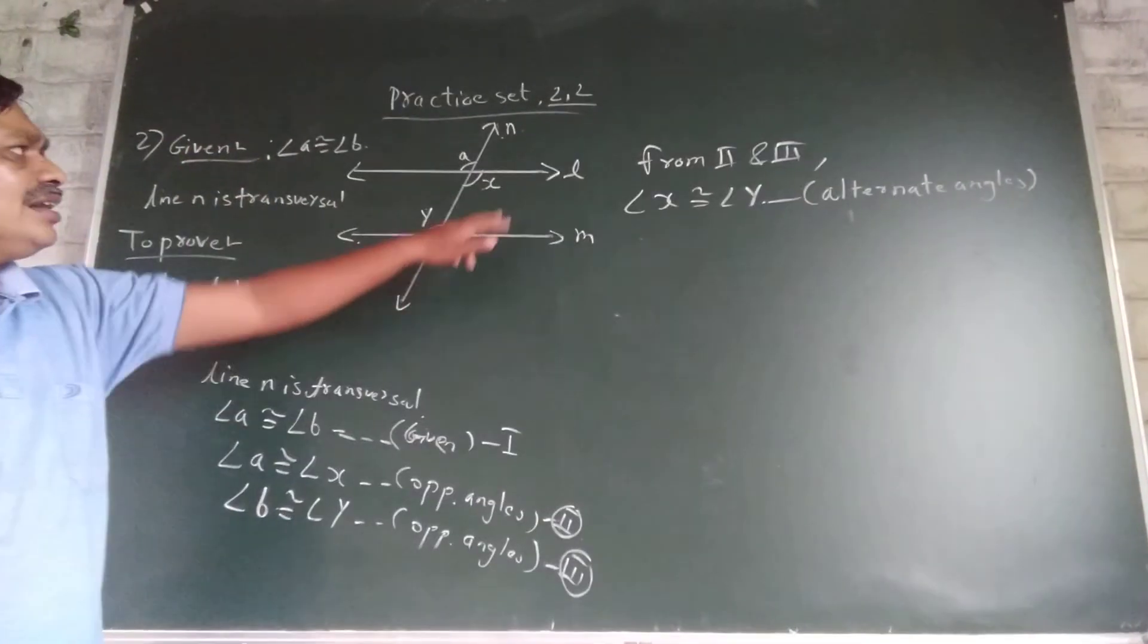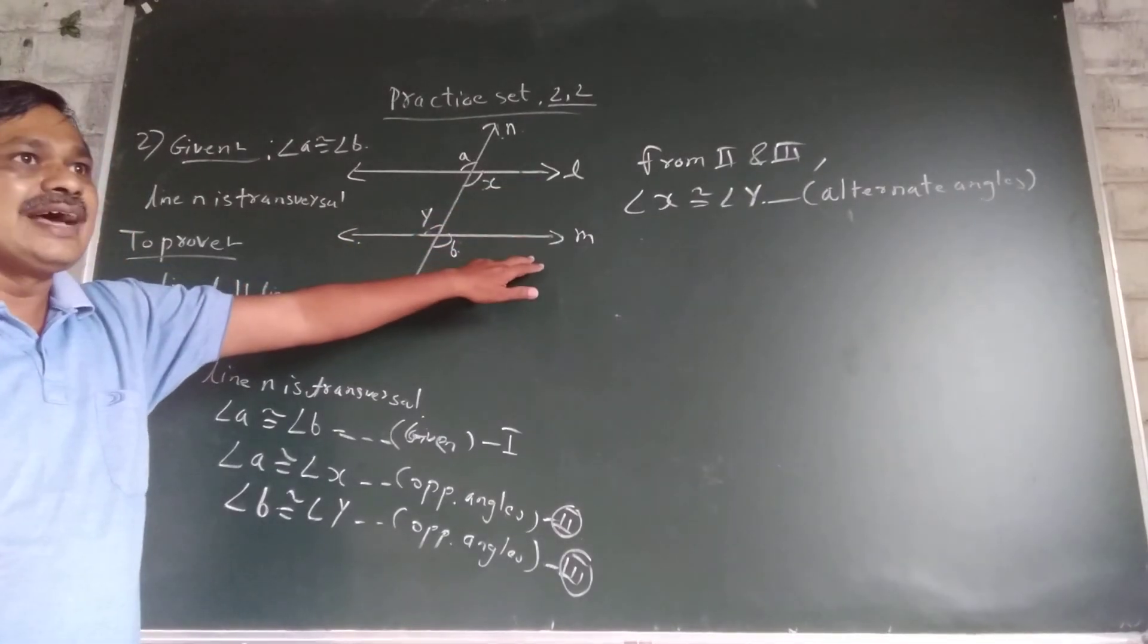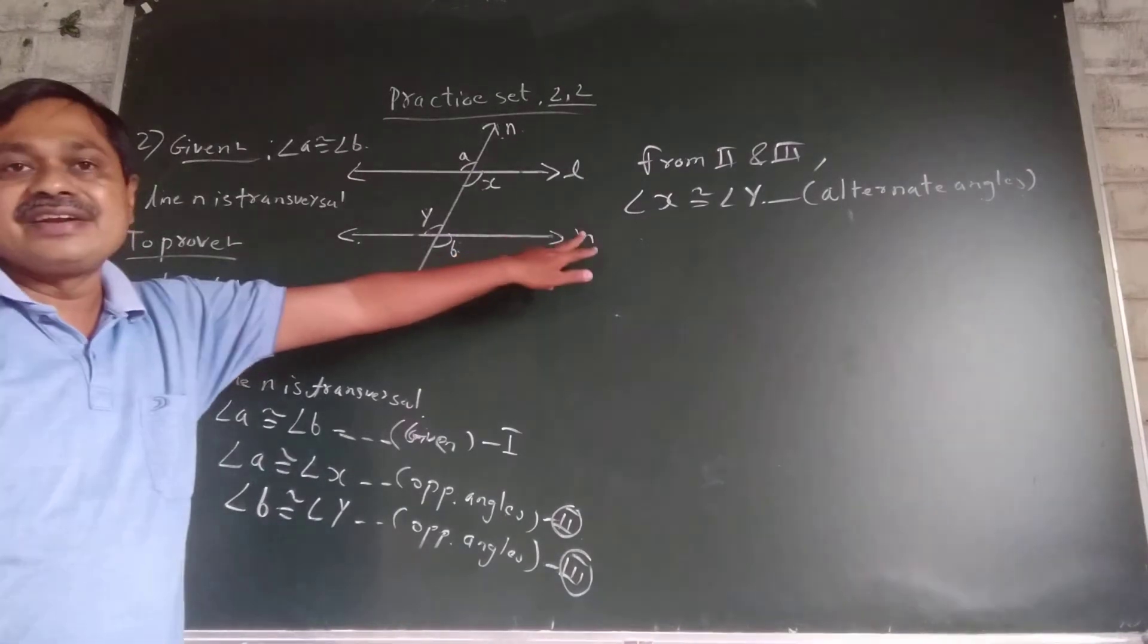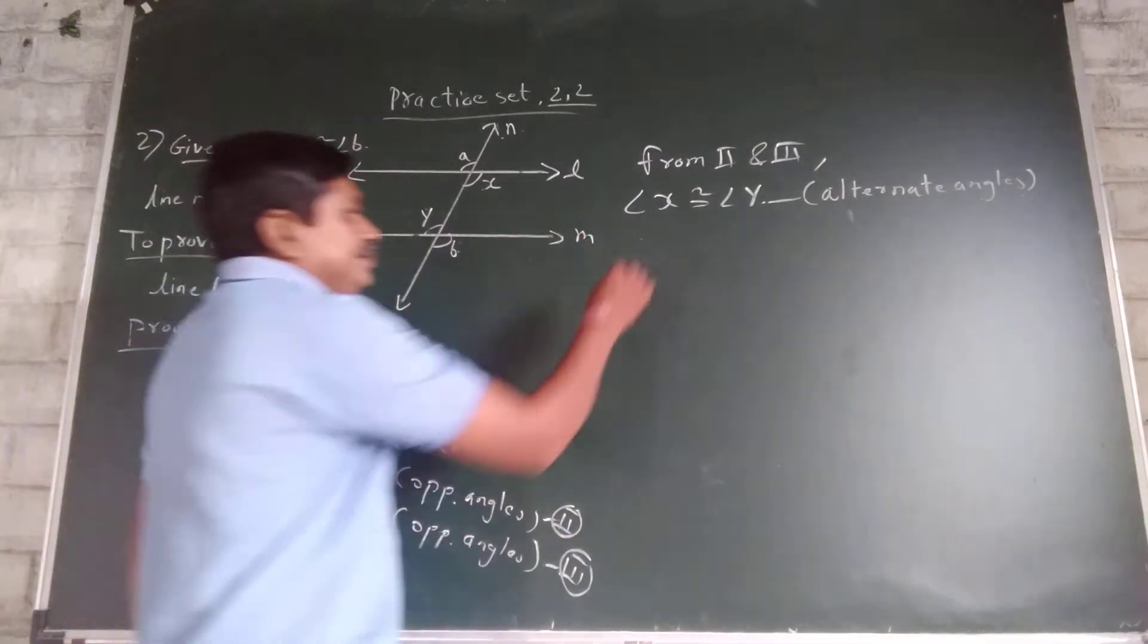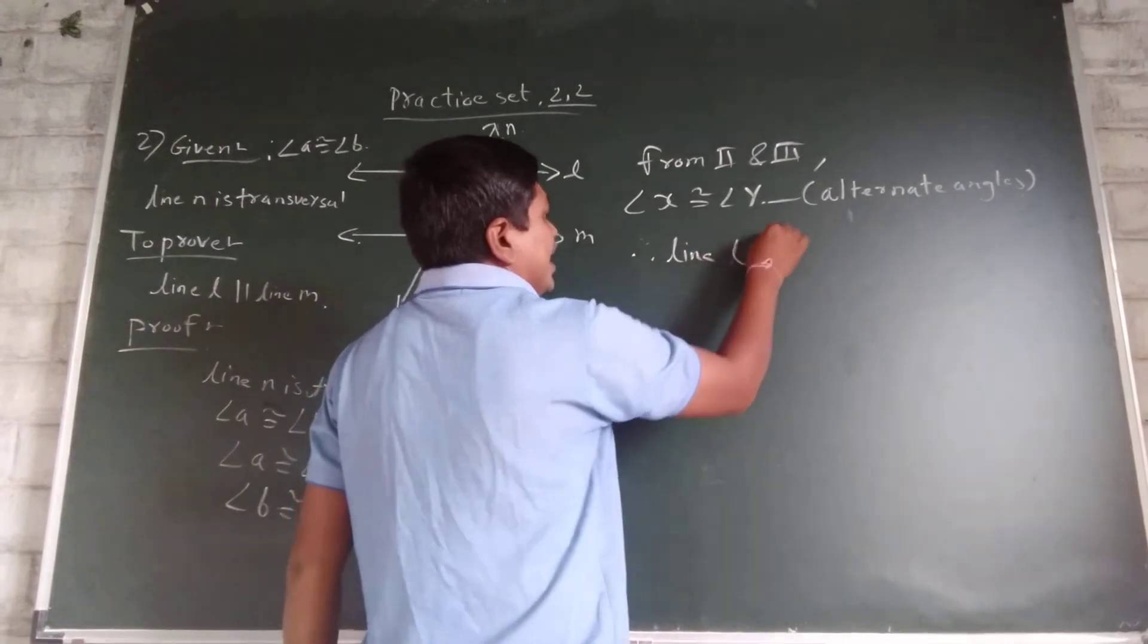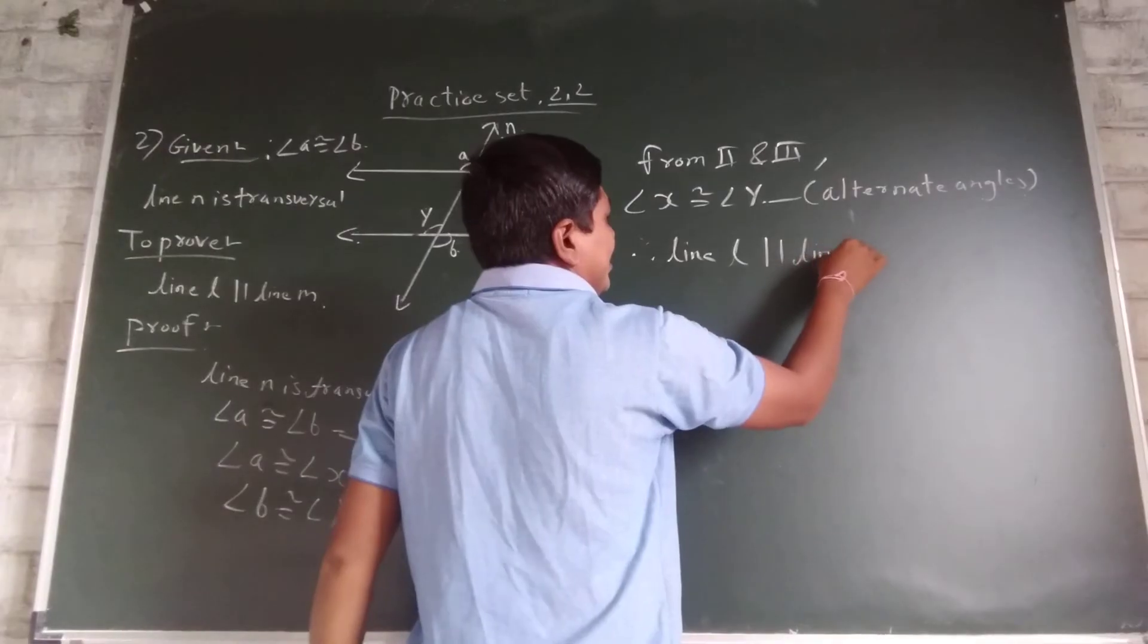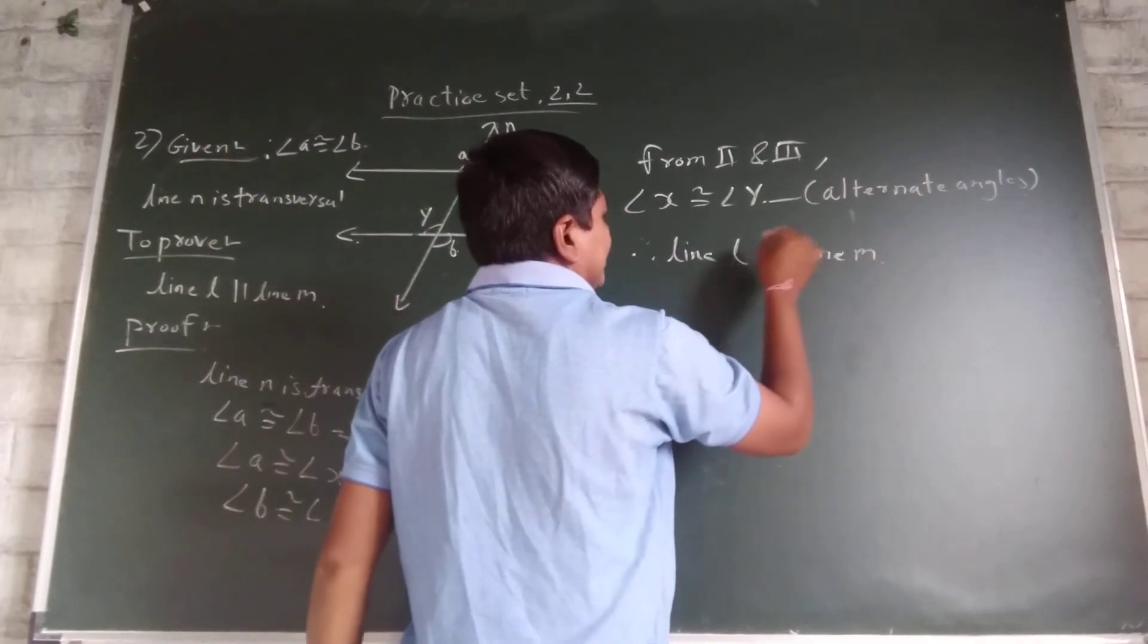They are alternate angles. Therefore, line L parallel to line M.